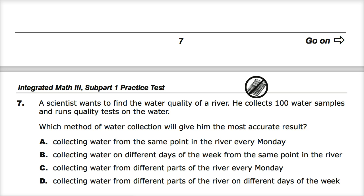C, collecting water from different parts of the river every Monday. This is sort of almost the vice versa of B. He does get more data from different parts of the water. So that's a good move. But still, it's only every Monday. And who knows what happens on Monday morning or Sunday night to make that be very consistent, but not a real good scope of what the river is actually doing.